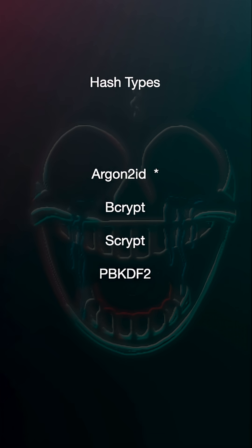There are a bunch of different hash types, but the one I'm talking about in today's video is known as argon2id. Hashes like argon2id are one-way, meaning they can't be reversed to reveal the original input.